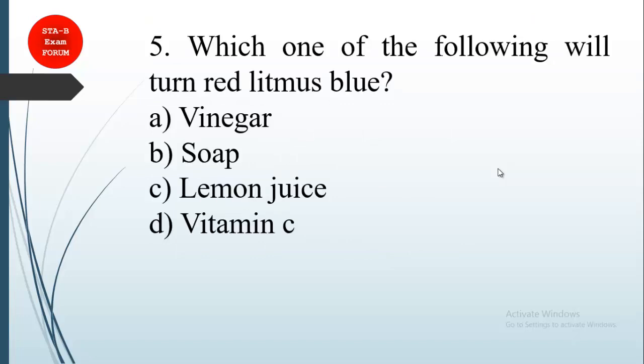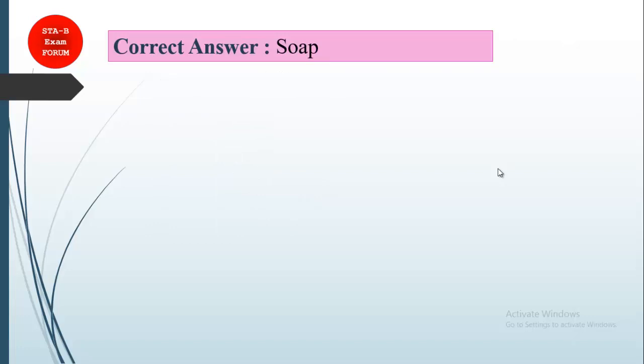Coming to the next question: which of the following turns red litmus blue? This is a very easy one. As you know, bases generally turn red litmus blue. You can think of blue means bases. Here option A, C, D are basically acidic in nature, and option B is soap, which is basic in nature. So the correct answer is option C, soap.